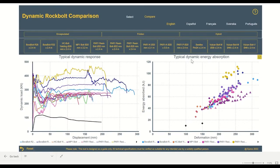On the right-hand side, we have our typical dynamic energy absorption. This is the typical energy absorbed with deformation for the various bolts. This graph comprises a number of tests that have been conducted on our dynamic impact tester in our research facility.